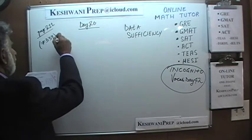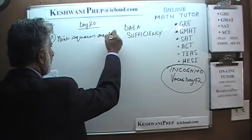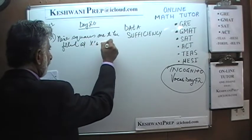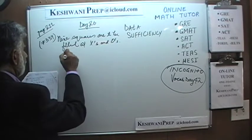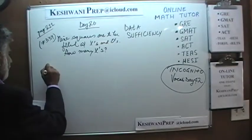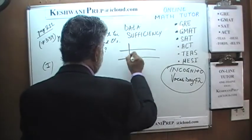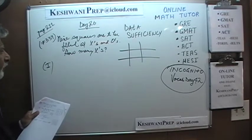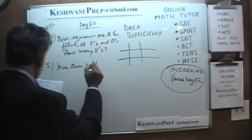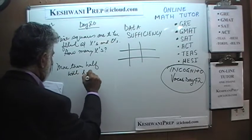It says: 9 squares are to be filled with X's and zeros. The question simply is: how many X's do we have? So here we are given a layout of 9 squares, and the question is how many of them have X's. Statement 1 says more than half will have zeros.